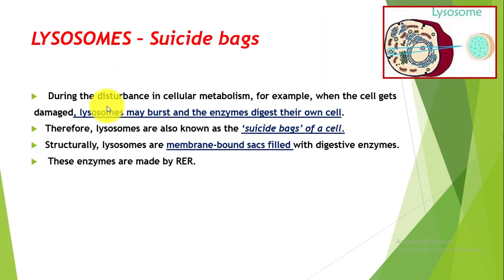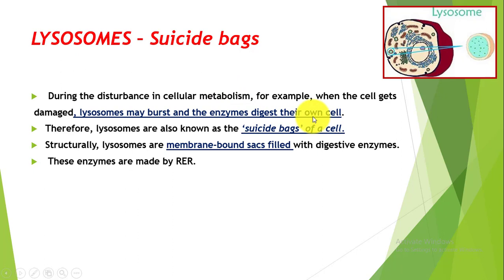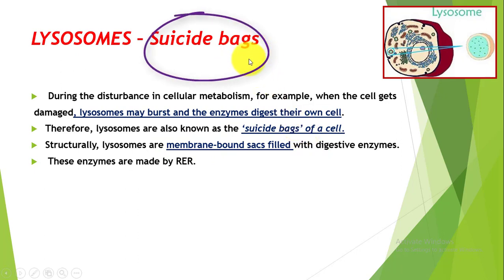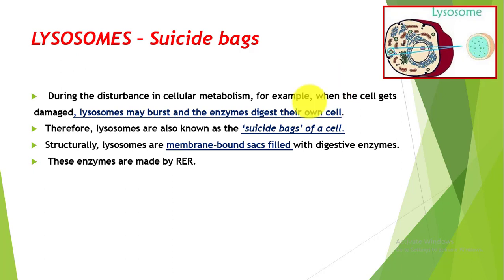Ab agar koi disturbance hoti hai cellular metabolism mein — for example jab cells get damaged — har cell mein lysosome present hai, chahe woh plant cell ho ya animal cell. Toh agar cell damage ho jata hai ya cell metabolism kharab ho jata hai, toh lysosome mein ye capability hoti hai ki ye khud ko hi maar sakti hai. Lysosome may burst and the enzymes digest their own cell — apne hi cell ko ye kha sakti hai. Isi liye lysosome ko suicide bags of a cell bhi kehte hain.